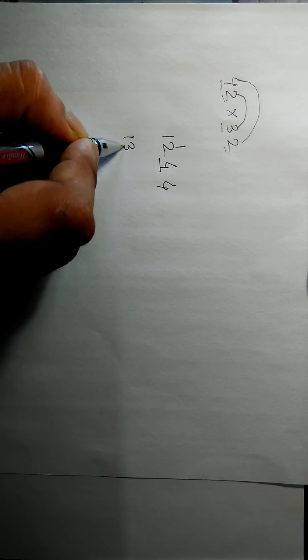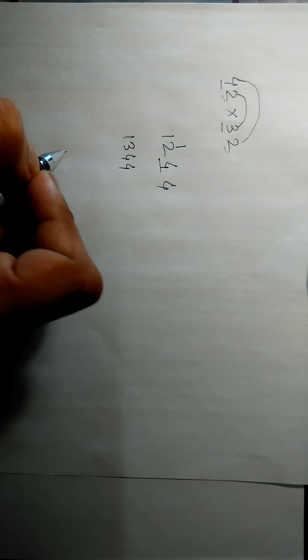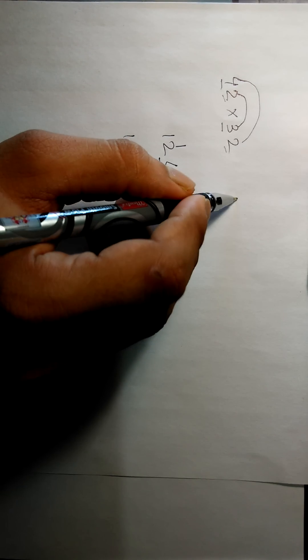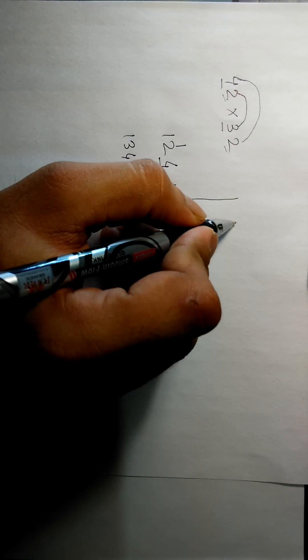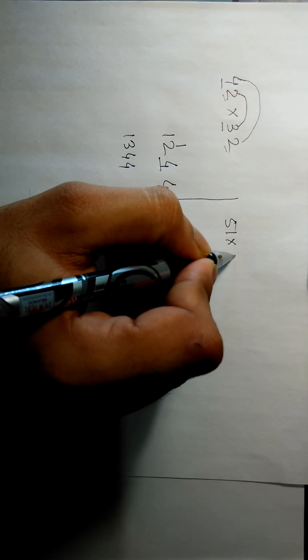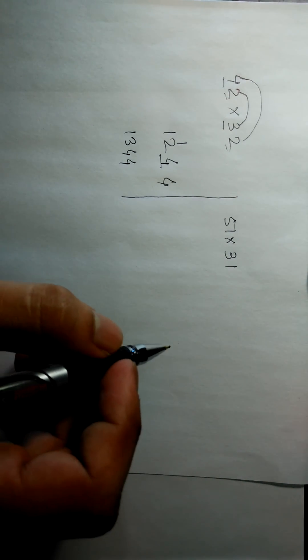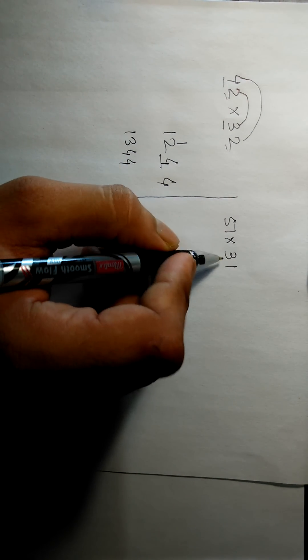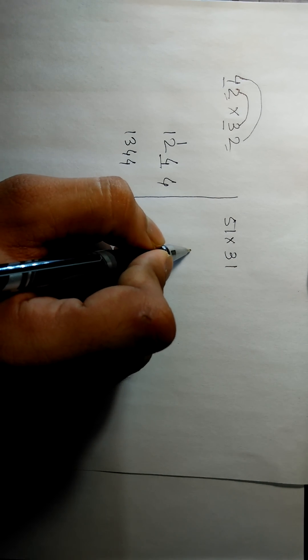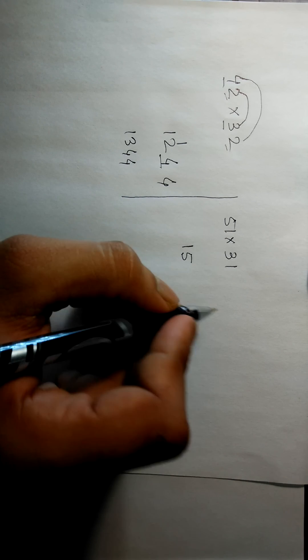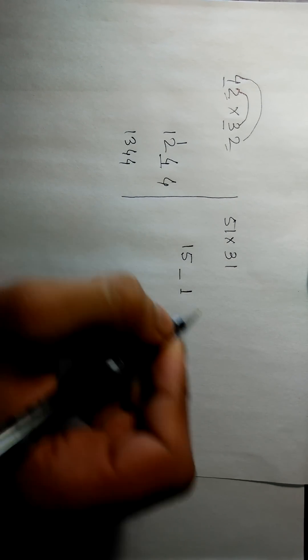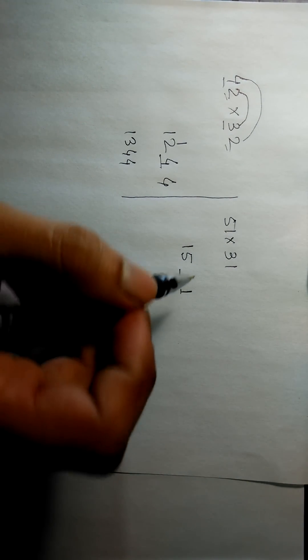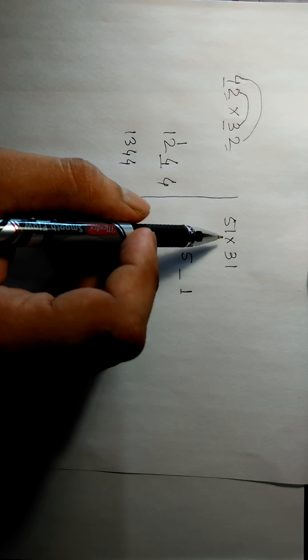Let us take another example, say 51 into 31. First we have to multiply 5 into 3, that is 15, and 1 into 1 is 1. Put a blank here. To get the middle digit, we have to add the multiplication of 1 and 3 and 5 and 1.